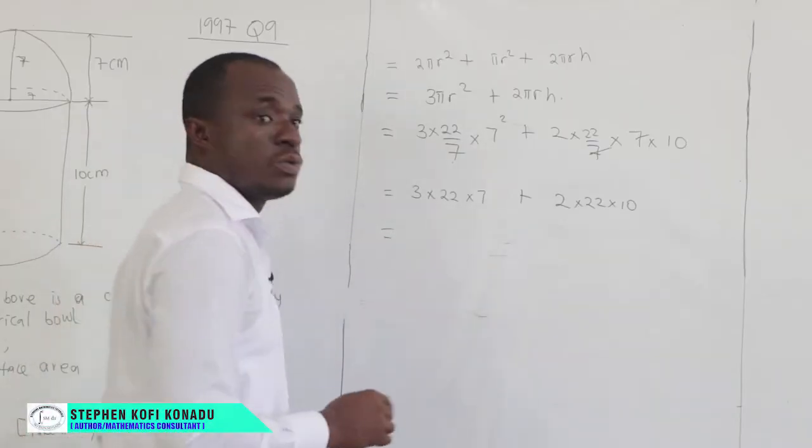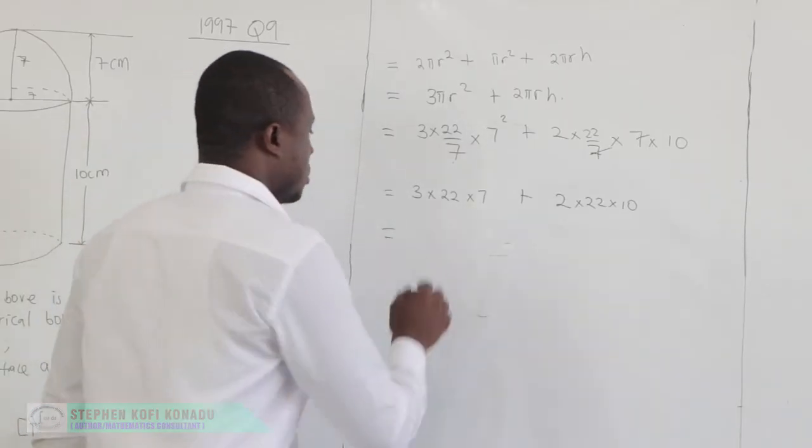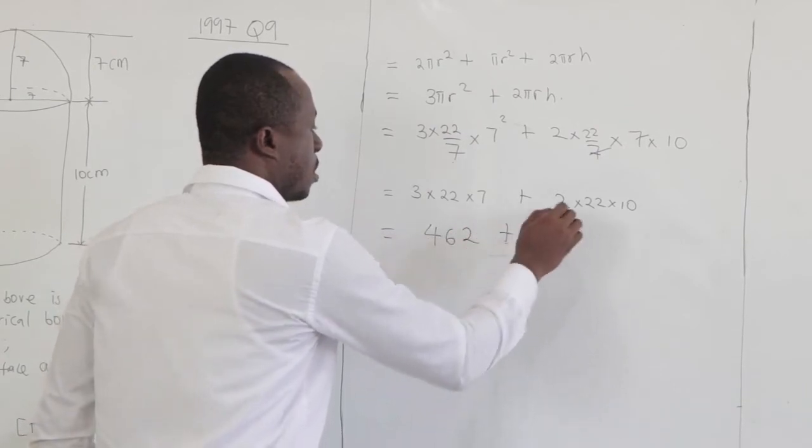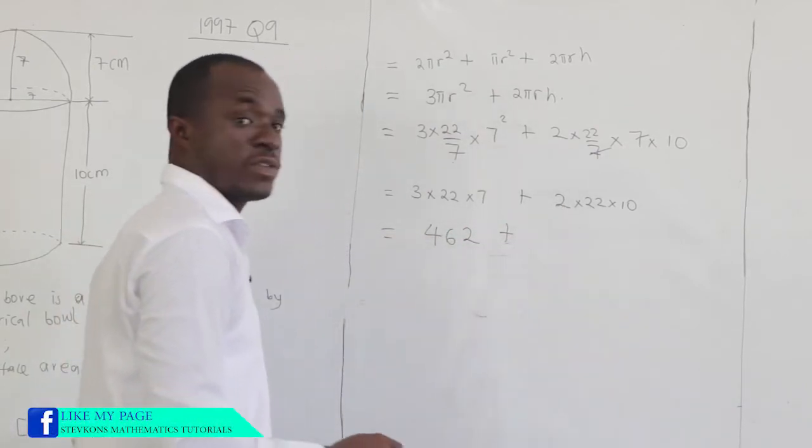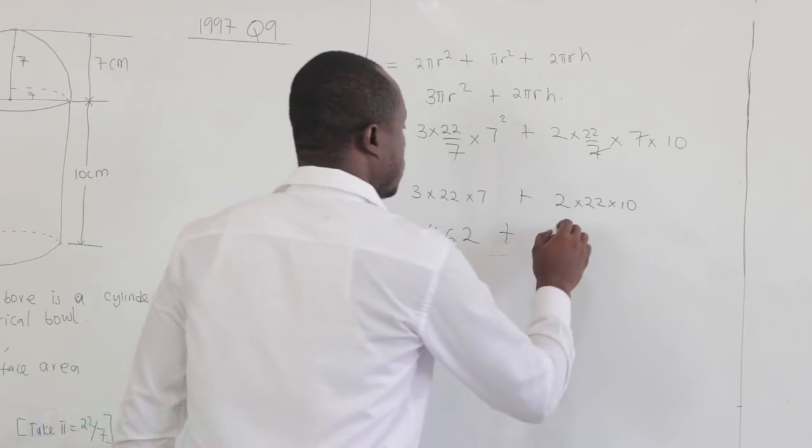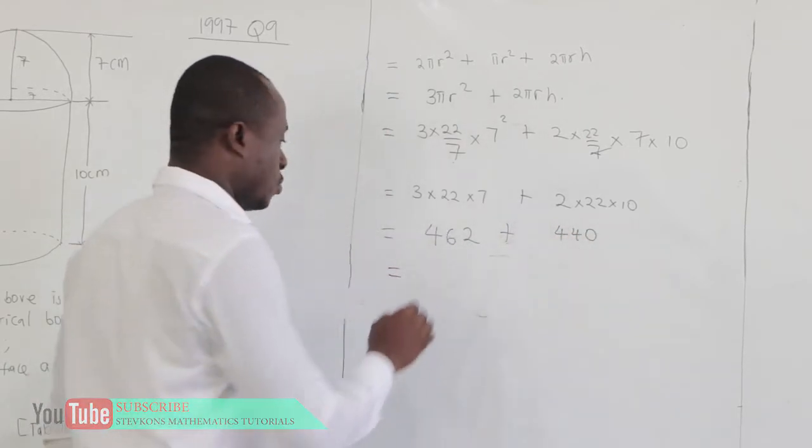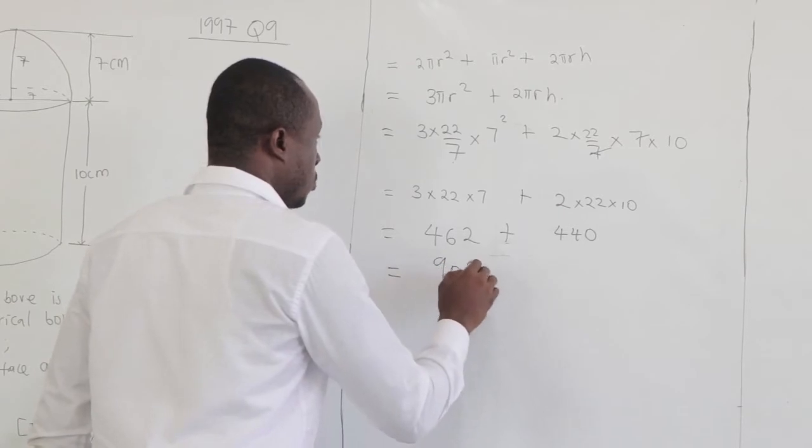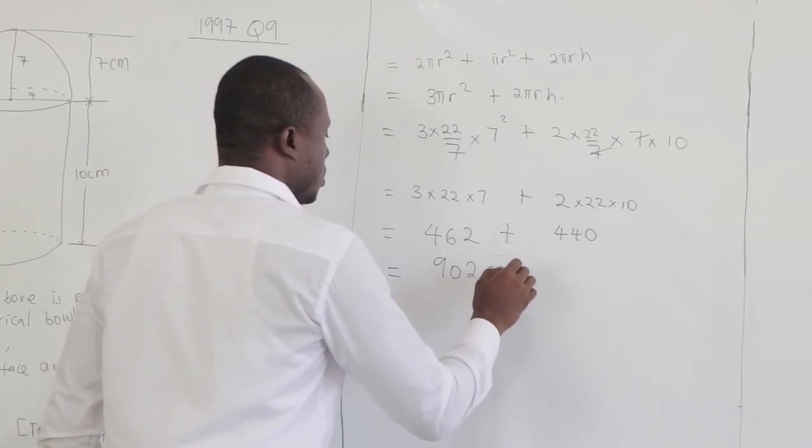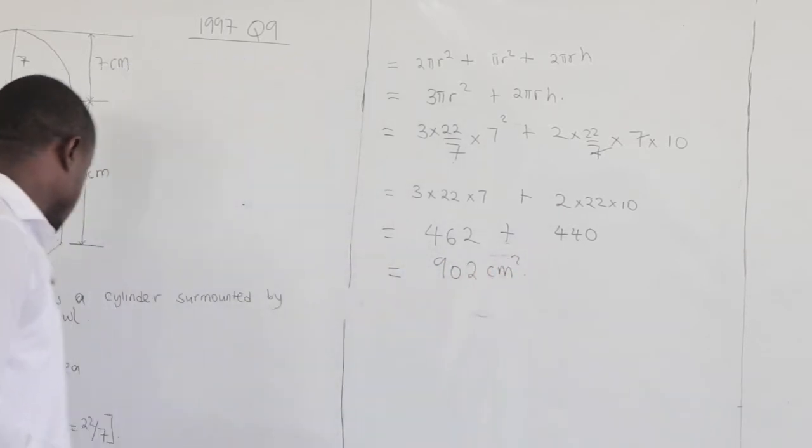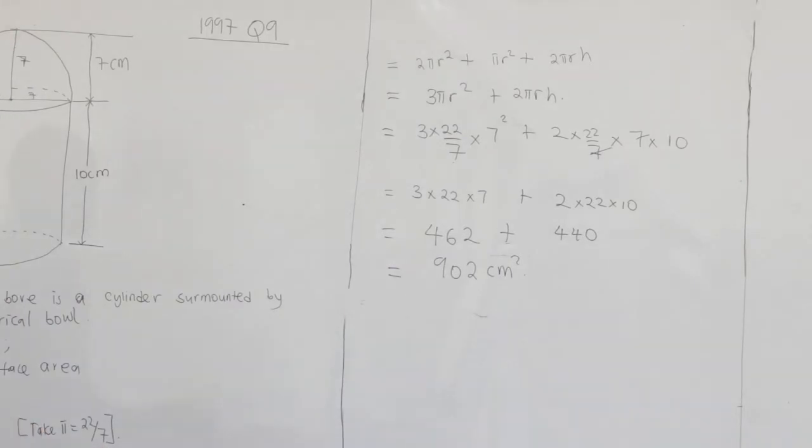So 3 times 22, that is 66 times 7. This will give us 462. Now, 2 times 22, that is 44. 44 times 10, that is 440. When I add the 2, I'll get 902 centimeters squared. So that is the total surface area.